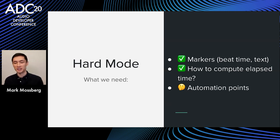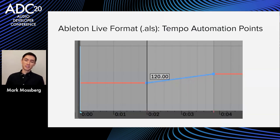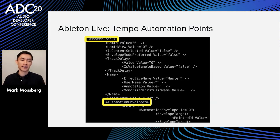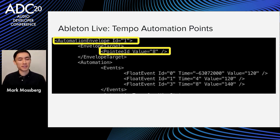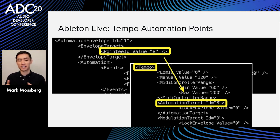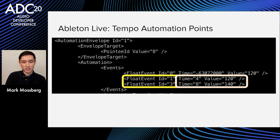Now let's get the automation points from the files. For a Live set with two automation points, we go back to the tempo tag in XML and look for the automation target ID. Then in the master track XML elements, we look through automation envelopes for the one whose pointy ID matches the automation target of the tempo. Once we find that envelope, we look at its float events, which have a time (beat time) and a value (BPM). That's what we needed.